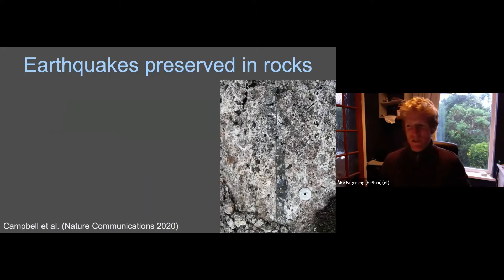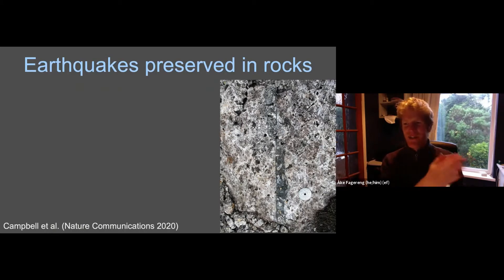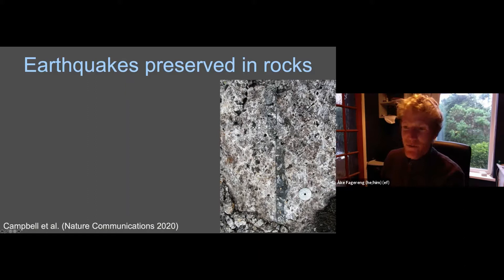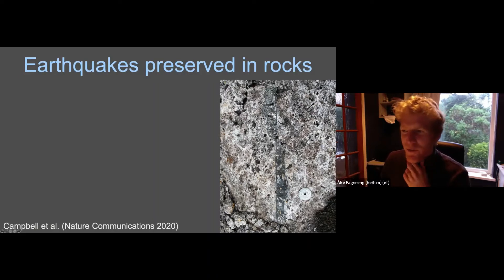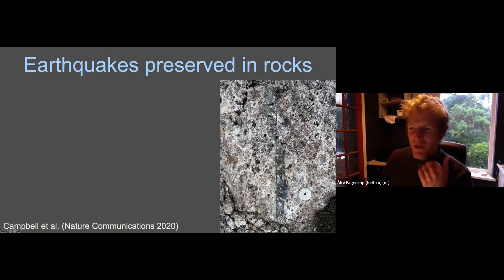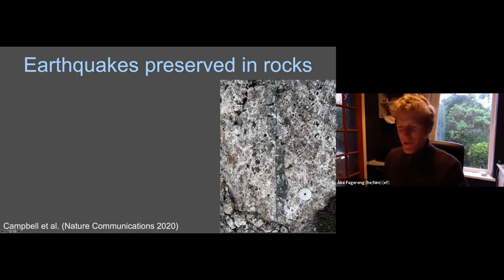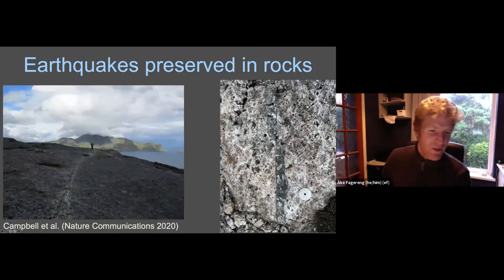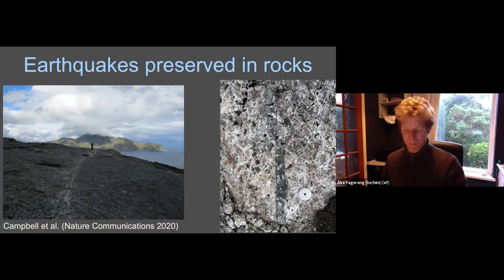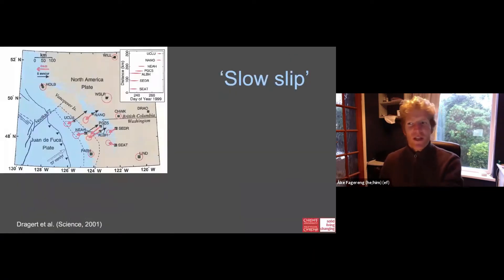That process is preserved in rocks. If you think of rocks sliding against each other very quickly, it's like rubbing your hands — it gets very hot, and you create melt along some fault surfaces. You can find these rocks in the field; these photos are from Lofoten where we've been working on such features. You find faults coated in black material with bits of wall rock in it, recording earthquakes. So the characteristic of an earthquake is localized, fast slip on faults.